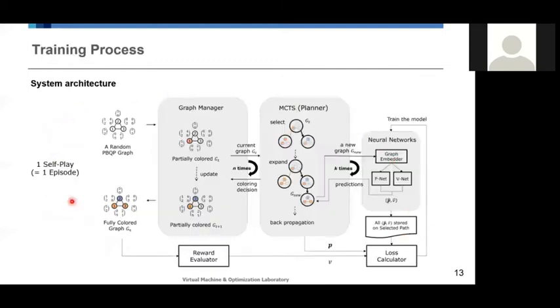Overall, one self-play includes generating a random PBQP graph, which the graph manager takes and colors vertices one by one. The graph manager uses MCTS internally to decide each coloring. MCTS is a planning algorithm which performs simulations k times, meaning it tries many possible options by planning ahead and building the game tree that includes promising future states. To efficiently find the promising options, they use the neural networks that predict how promising each action would be, which is denoted by P hat, and how good the current state is, denoted by V hat.